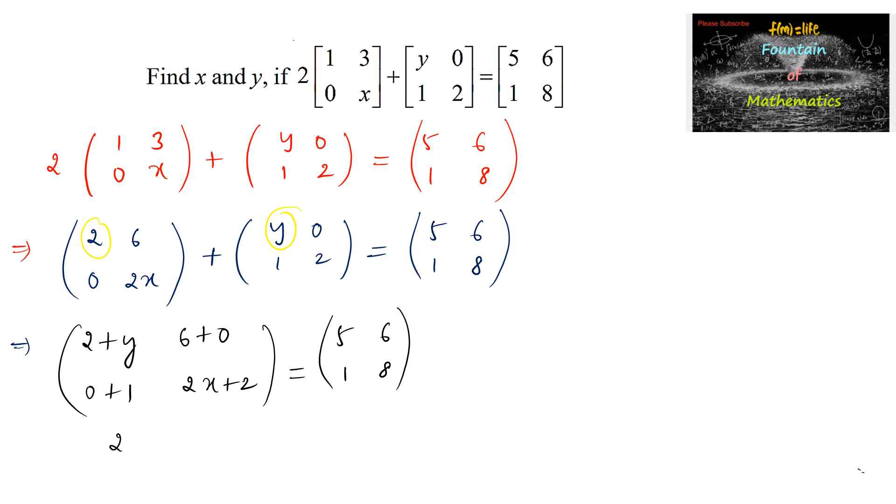We can write 2 plus y. Since two matrices are said to be equal if the corresponding elements are equal and orders are same, we can consider 2 plus y is equal to 5, which implies y is equal to 5 minus 2, that is 3.